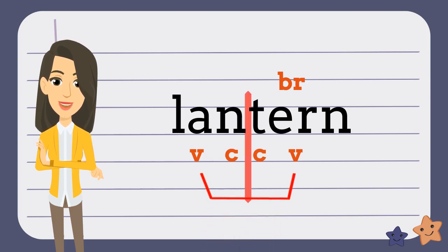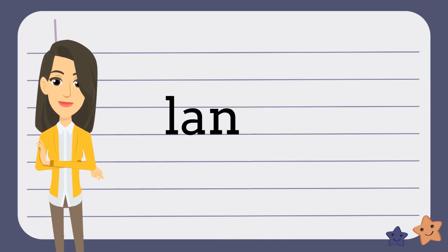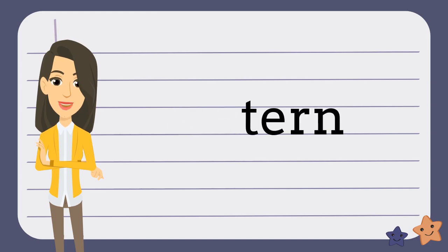Then draw a line between the consonants. Now the word is broken up. The first part is L-A-N. We know that if a syllable ends with a consonant, the vowel makes a short vowel sound, so we would pronounce this LAN. The second part is T-E-R-N. We know the bossy-R is in this part, so we would say TURN. When we put it together, we get LANTERN.